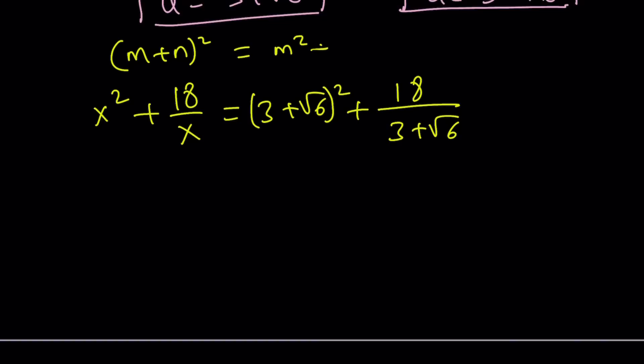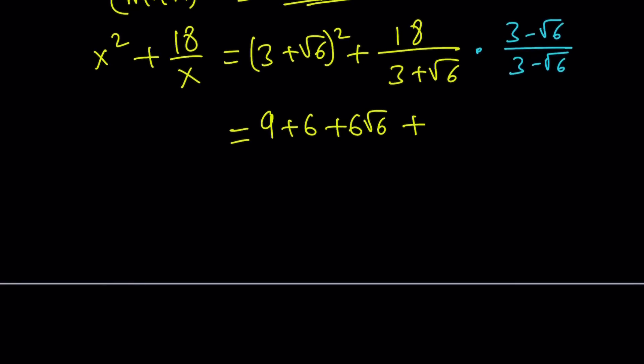m squared plus n squared plus 2mn. That's my favorite version. Even though some people are going to switch these around, I like to keep the squares together. Same thing. So we get 3 squared, root 6 squared, plus 2ab, plus 18. Now, this one can be simplified using the conjugate - rationalizing the denominator.